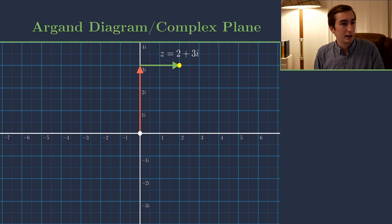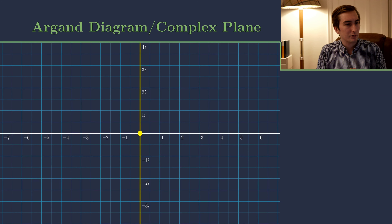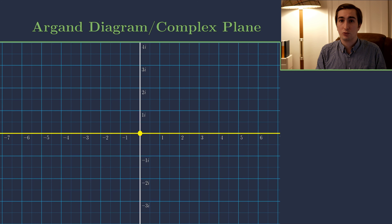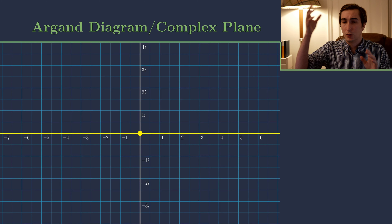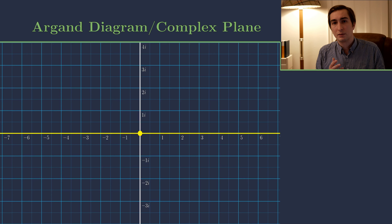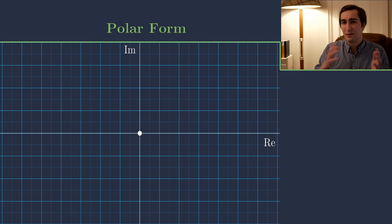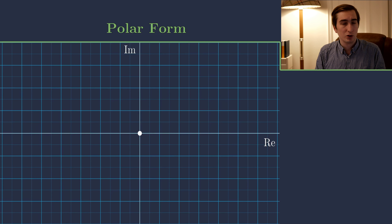So complex numbers in the form x plus iy are nothing more than points and vectors on a two-dimensional plane, and there's a deep connection to linear algebra we'll see in future videos. The vertical axis is called the imaginary axis, sometimes denoted Im or Im(z), and the horizontal axis is the real axis, denoted Re. Now that we can represent complex numbers as points on the complex plane, we don't necessarily need x and y coordinates — this leads to the polar form of a complex number.